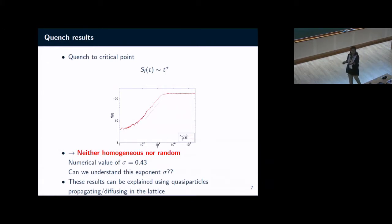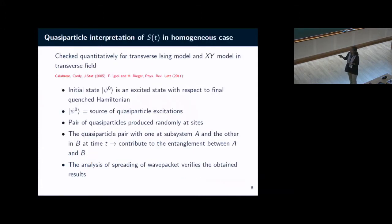Then we asked this question: can we explain this exponent 0.43? We attempted explaining this exponent using the picture of quasiparticles which propagate in your lattice after quenching. Initially your system starts from the ground state corresponding to the initial Hamiltonian, and when you quench it your state is now in an excited state and hence it will produce quasiparticles. This has been very well developed in case of a homogeneous system. These quasiparticles propagate in the system. The quasiparticle interpretation in the homogeneous case would be that your initial state, which now has become an eigenstate, has become a source of quasiparticles. A pair of quasiparticles which are produced randomly at sites will propagate in the system.